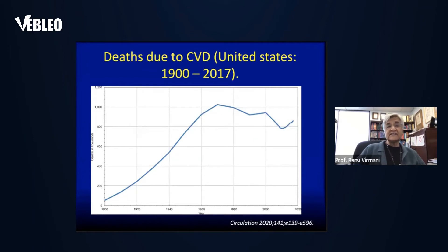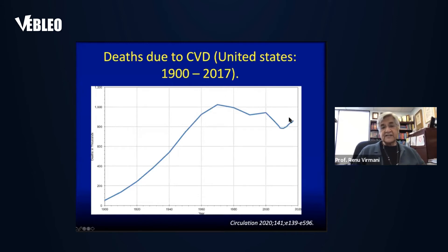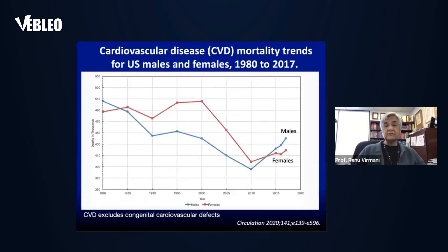Deaths due to cardiovascular disease in the United States from 1900 to 2017 show a rapid rise up to close to 1990, and since 1990 there has been a decline. However, since 2010 there has been an increase, as we're seeing now. Of course, today COVID-19 has overtaken and has become the first killer of human beings on Earth, especially in the United States.